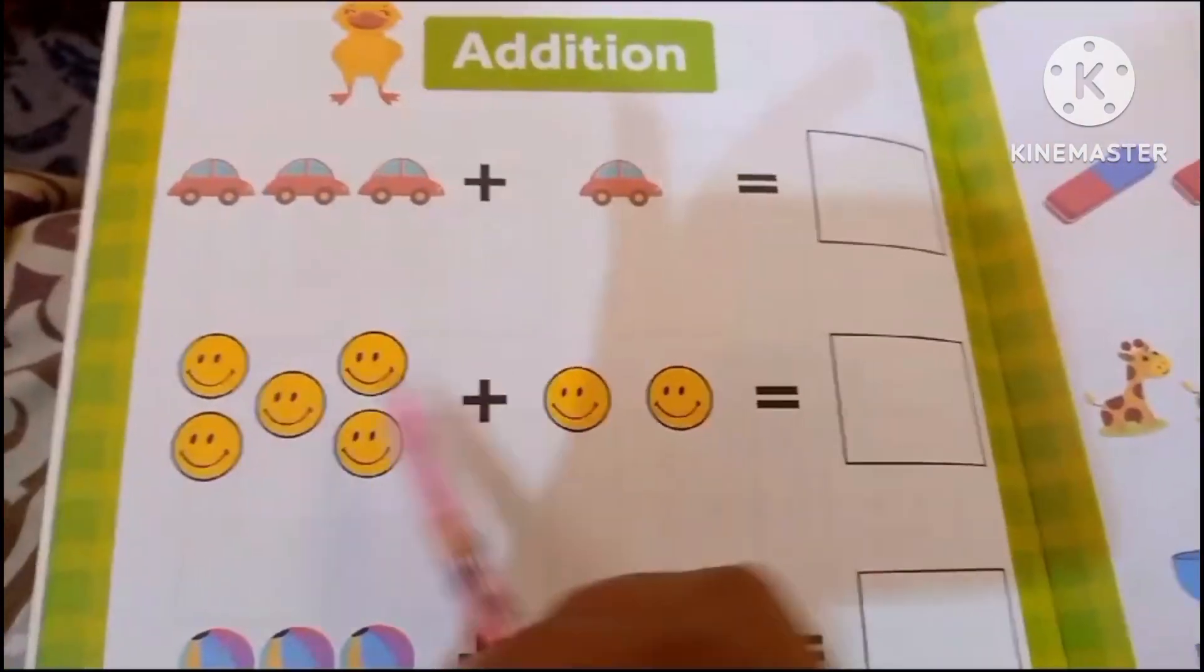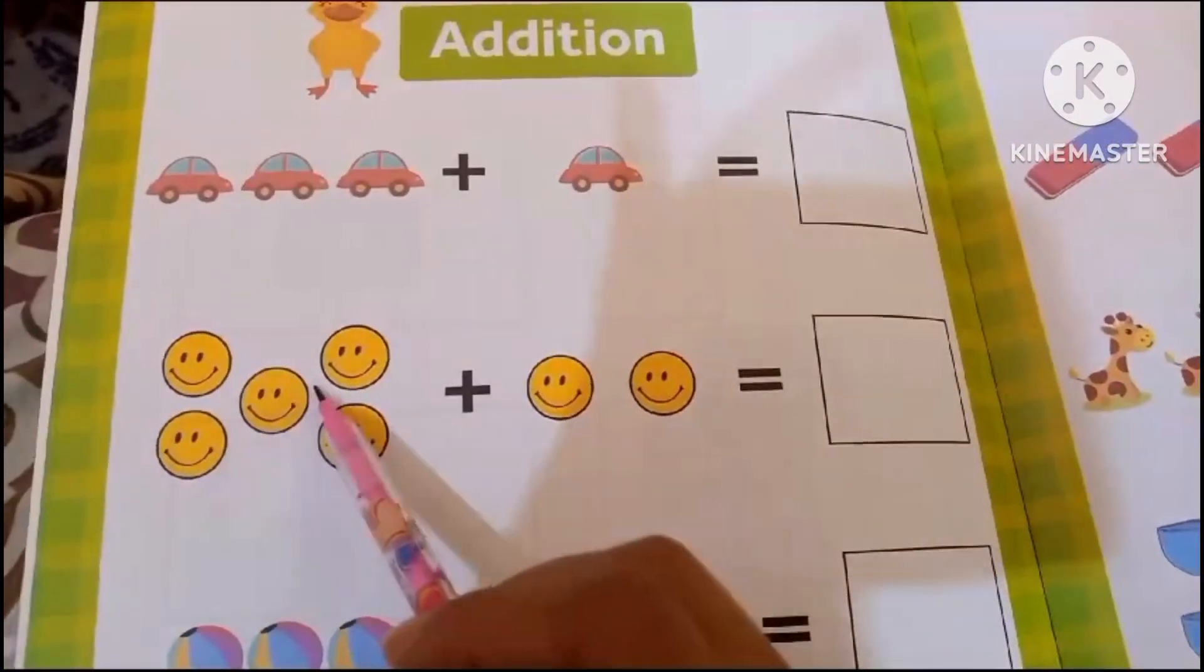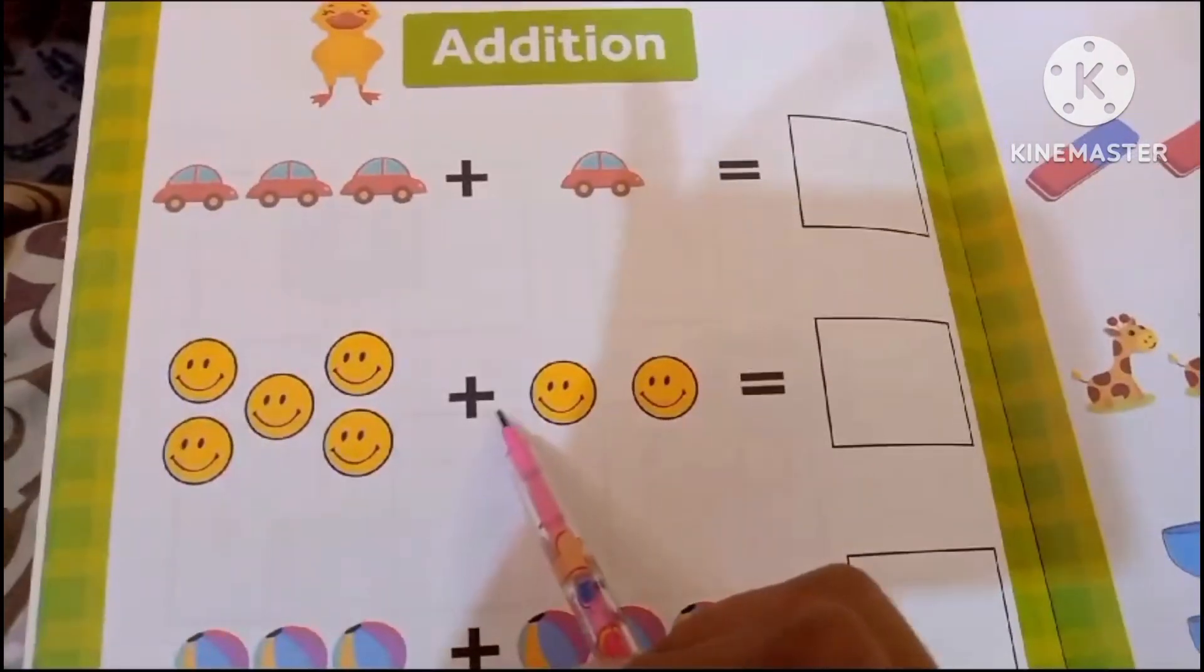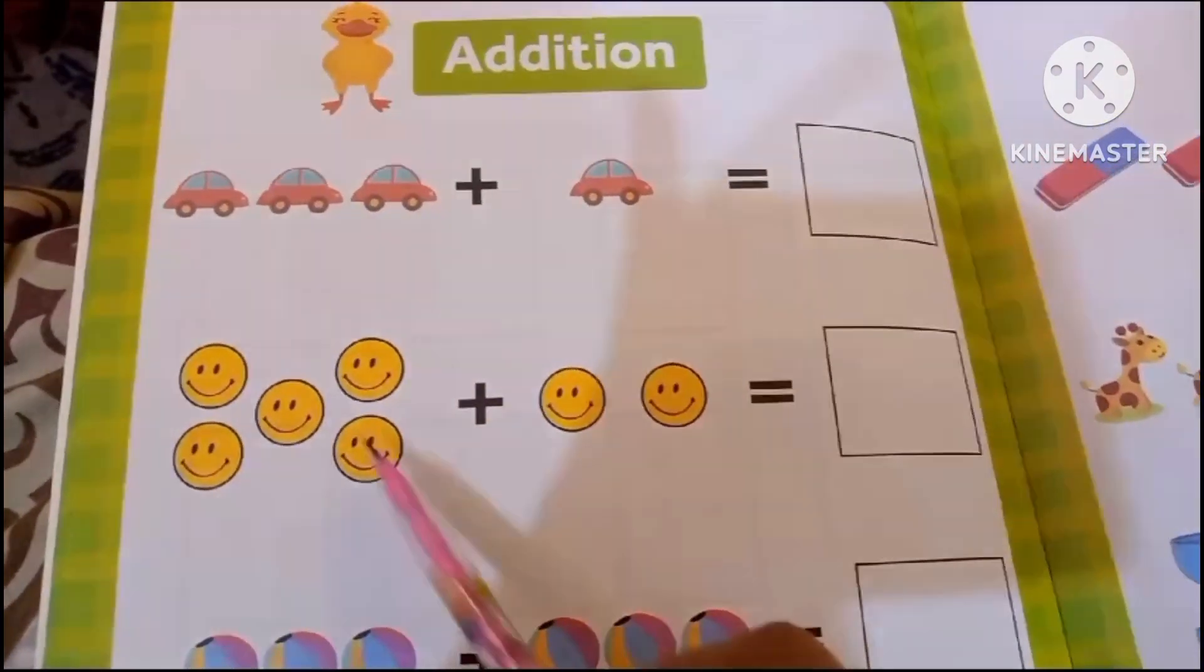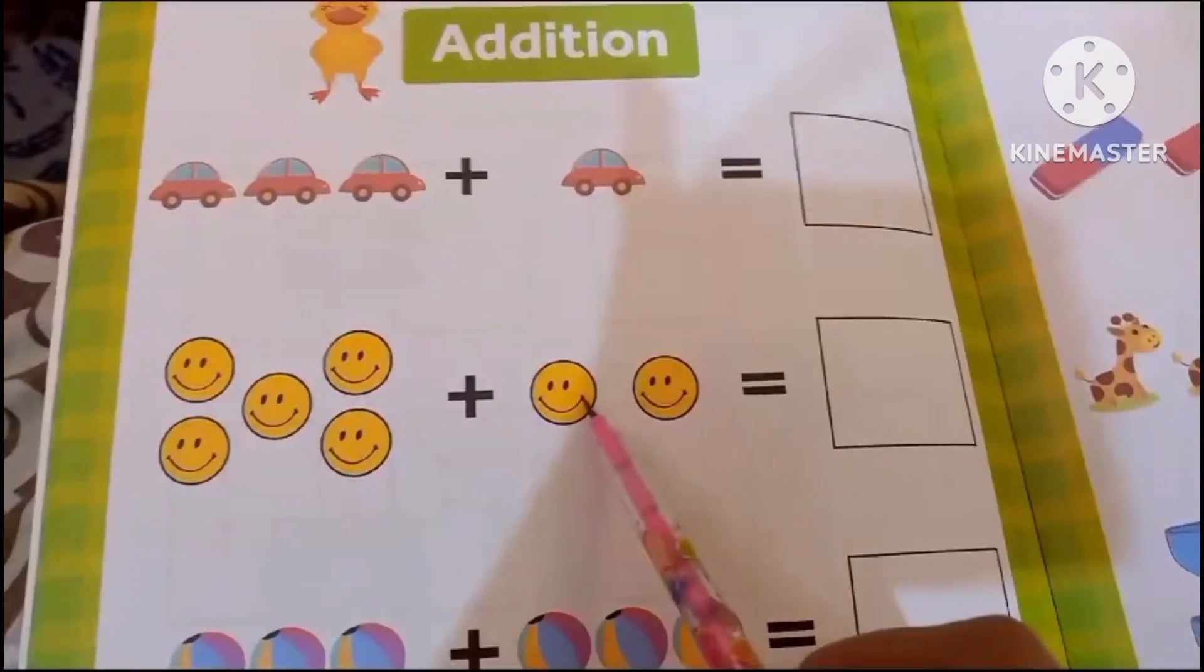How many smiley faces are here? 1, 2, 3, 4, 5 plus 2... 1, 2, 3, 4, 5, 6, 7.